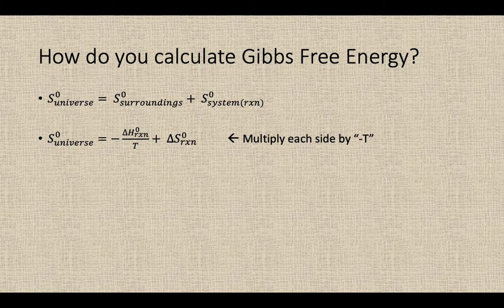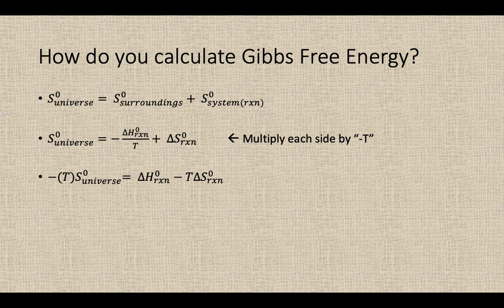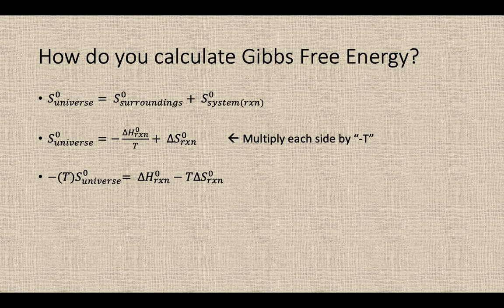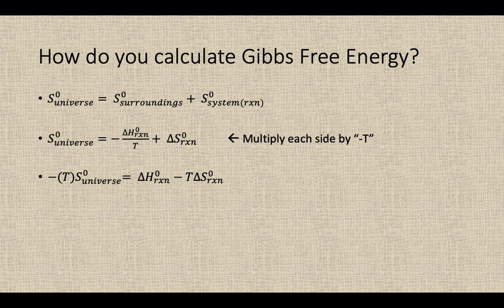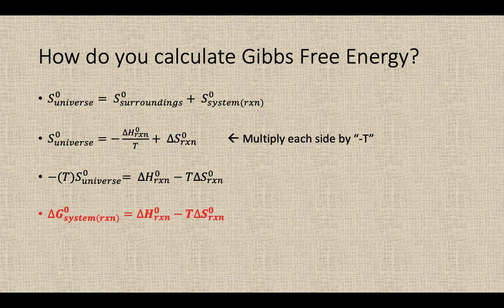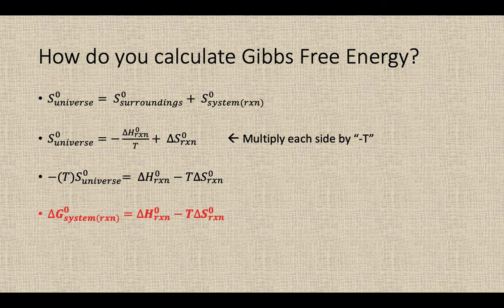If we took that reaction and multiplied everything in there by negative T, we would get this: negative T times the entropy of the universe equals the delta H of reaction minus T times the delta S of the reaction. So if you look on that right-hand side, everything there is just based on the reaction only. We've taken away that surroundings piece, we've taken away the universe piece on the right-hand side. So Gibbs free energy is a calculation of that entropy of the universe times negative T. When you multiply those two variables together, it's called its own unique variable there, the delta G of the system, the Gibbs free energy, the energy that's free to do work on the surroundings out into the universe. And so we can just substitute that negative T S universe for delta G of the system.